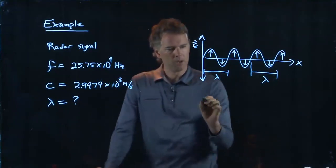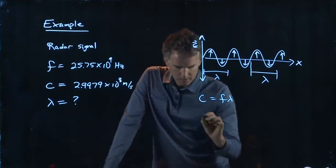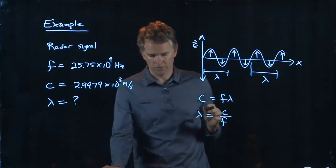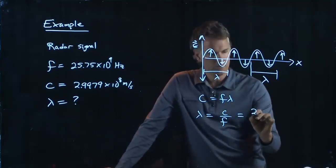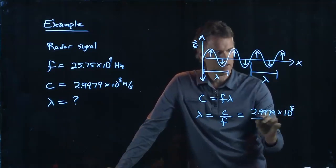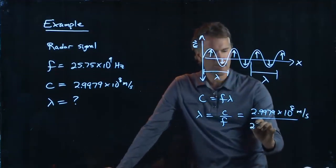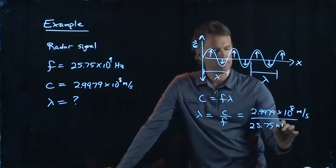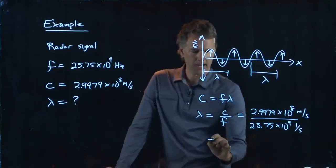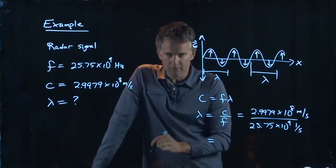And we know the relationship, right? We know that C is equal to F times lambda. So what is lambda? It is C over F. And now we have all those numbers. C is 2.9979 times 10 to the 8 meters per second. F we said was 25.75 times 10 to the 9. Hertz is 1 over seconds, and so we're going to end up with something in meters.